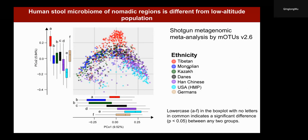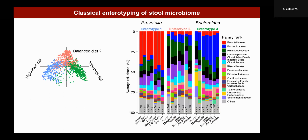We found that Tibetan, Mongolian, and Kazakh people have quite distinct gut microbiome compositions compared to low altitude populations. We then performed enterotyping for those populations and found three classical enterotypes, which are also commonly observed in low altitude populations, including the Prevotella enterotype and the Bacteroides enterotype.